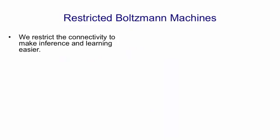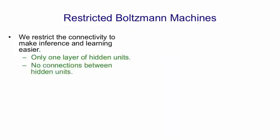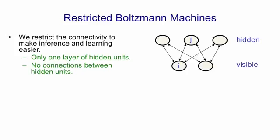In a restricted Boltzmann machine, we restrict the connectivity of the network in order to make both inference and learning easier. It only has one layer of hidden units, and there's no connections between the hidden units. There's also no connections between the visible units. So the architecture looks like that. It's what computer scientists call a bipartite graph. There's two pieces, and within each piece there's no connections.